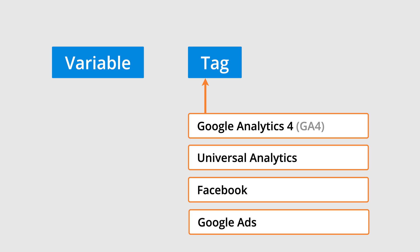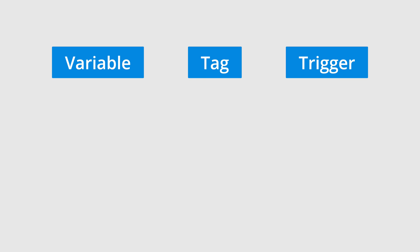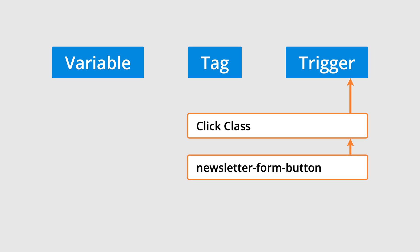You also have the option of creating other types of tags in Google Tag Manager — for example, if you want to send details about the button click to Universal Analytics instead of Google Analytics 4, to Google Ads or Facebook. We will also create a trigger, which lets us control when to fire our tag. We will configure the trigger to look at the information available in the variable, and if the details match the button we want to track, then the trigger will fire our tag, which will then send an event to Google Analytics 4.